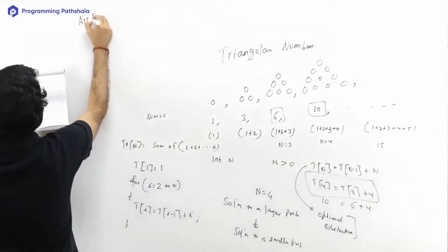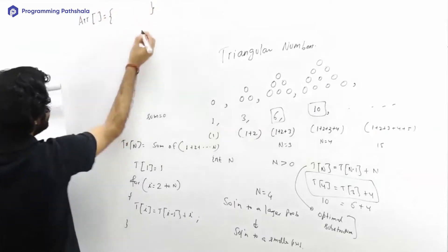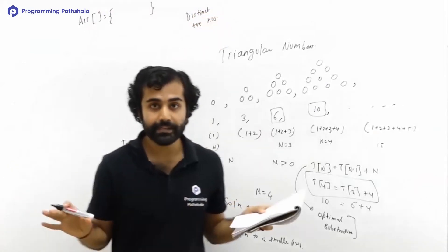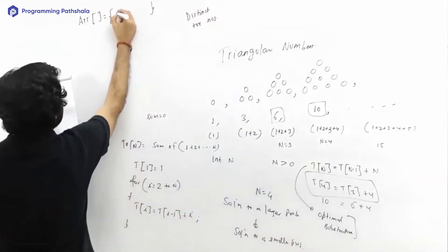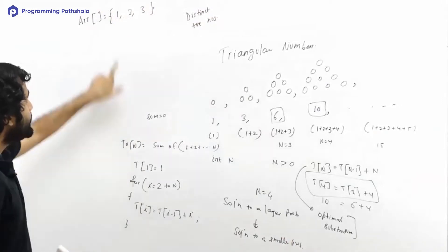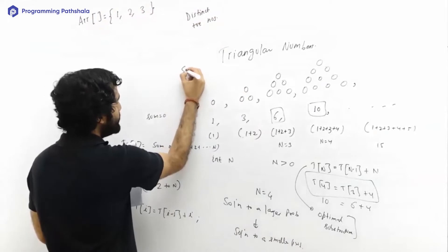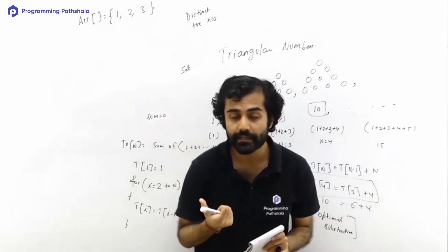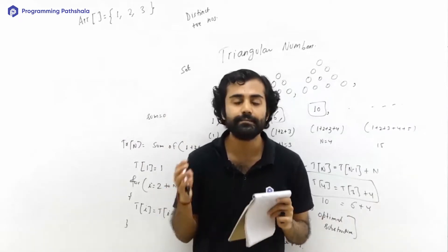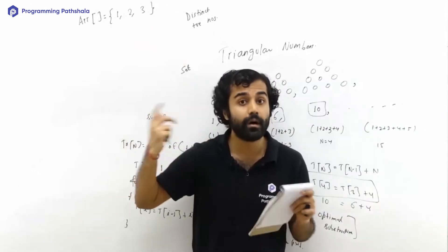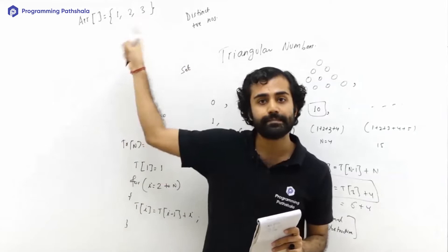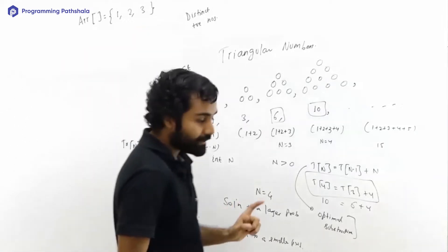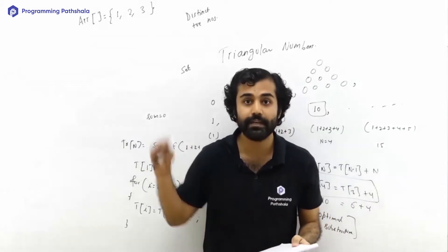Let's say we have been given an array containing distinct positive numbers — no repetitions. So let's say the elements are 1, 2, and 3. This is a set — a collection of distinct items with no repetition. This set will have multiple subsets. The total number of subsets is 2 raised to the power n. Here the size is 3, so 2 raised to power 3 equals 8 subsets.